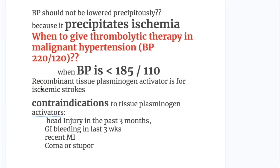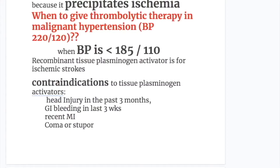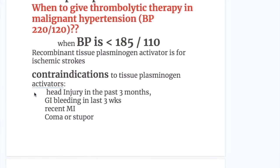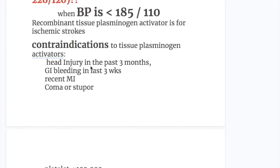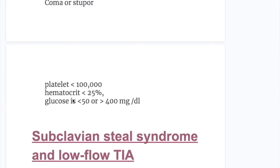Recombinant tissue plasminogen activator (rtPA) is used for ischemic stroke. Contraindications include: head injury in the past 3 months, GI bleeding in the past 3 weeks, recent MI, coma or stupor, platelet count less than 100,000, hematocrit less than 25%, or glucose less than 50 or more than 400 mg per 100 mL.